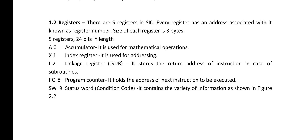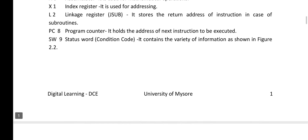The fourth register is PC with register number 8, where PC stands for program counter. This register holds the address of the next instruction to be executed. The fifth register is SW with register number 9. SW stands for status word, which is the condition code register. It contains a variety of information, as shown in figure 2.2.